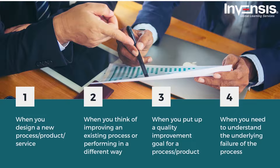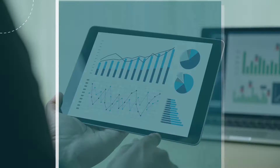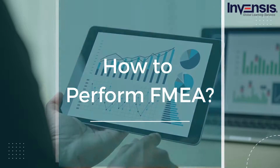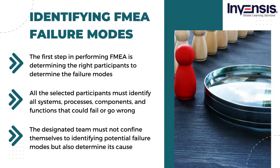Now let's understand how to perform FMEA. The first step is identifying failure modes. The first step in performing FMEA is determining the right participants to identify the failure modes, as only the right people with the right experience must be involved. These could be designers or process owners. FMEA practitioners could also invite end customers and suppliers to gather alternative viewpoints, where feasible. Once you gather all the participants, the brainstorming session can begin.